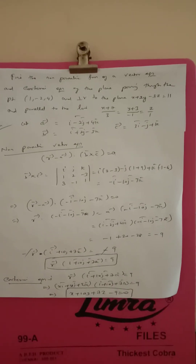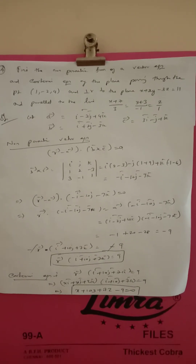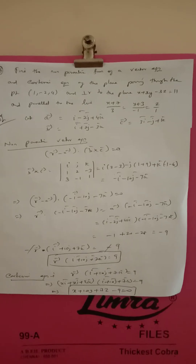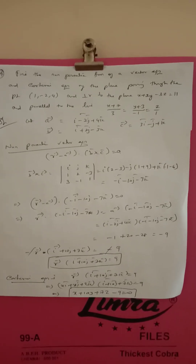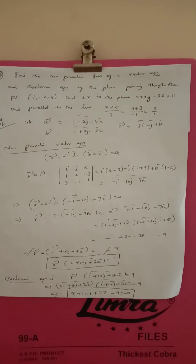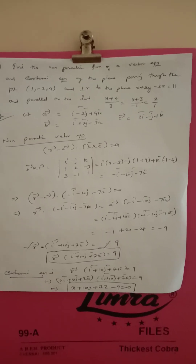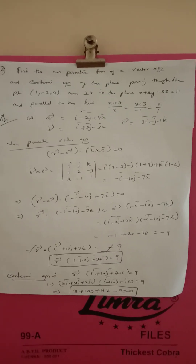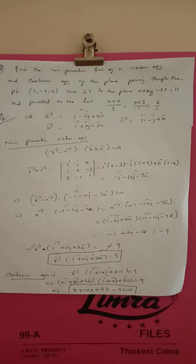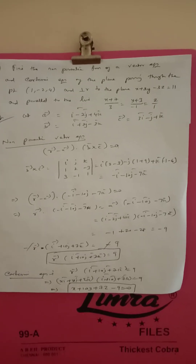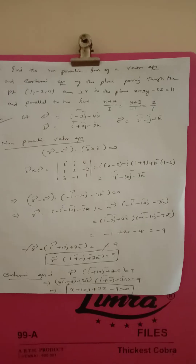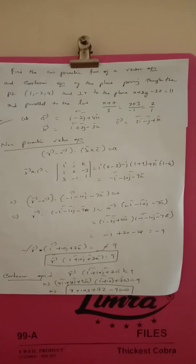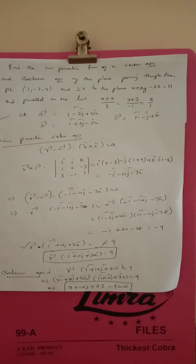This plane is passing through the point (1, -2, 4) and perpendicular to the plane x plus 2y minus 3z equal to 11, and parallel to the line. The line equation is given in Cartesian form: x plus 7 by 3 equal to y plus 3 by minus 1 and z by 1.